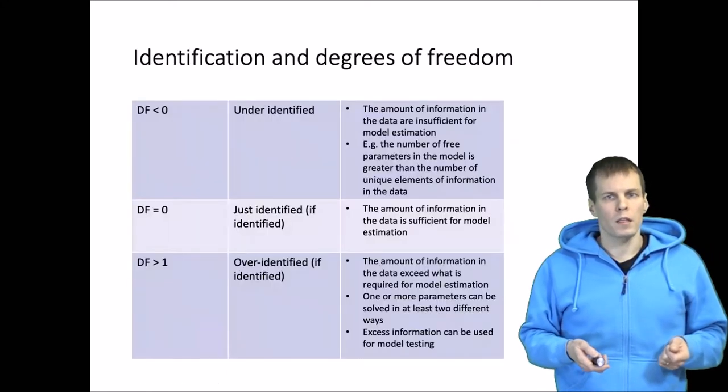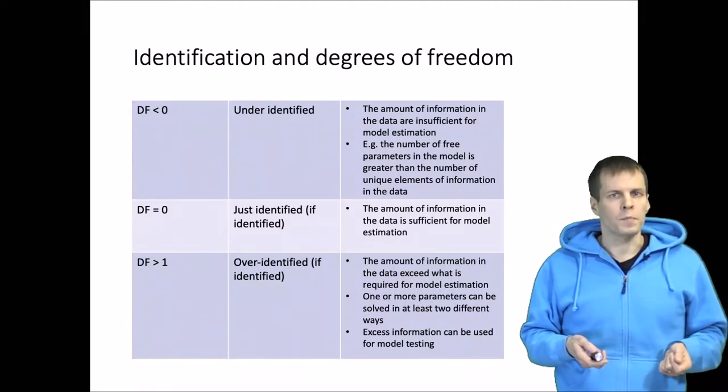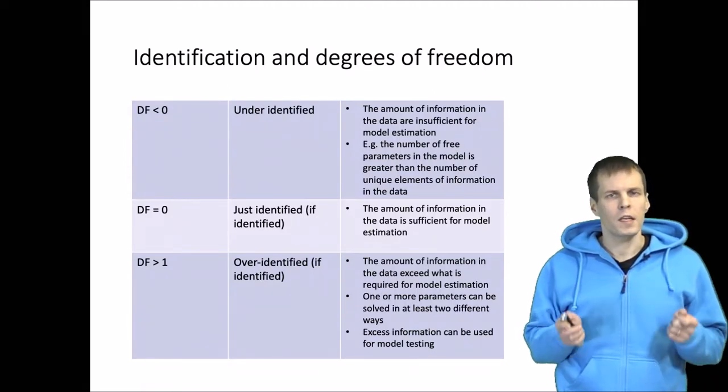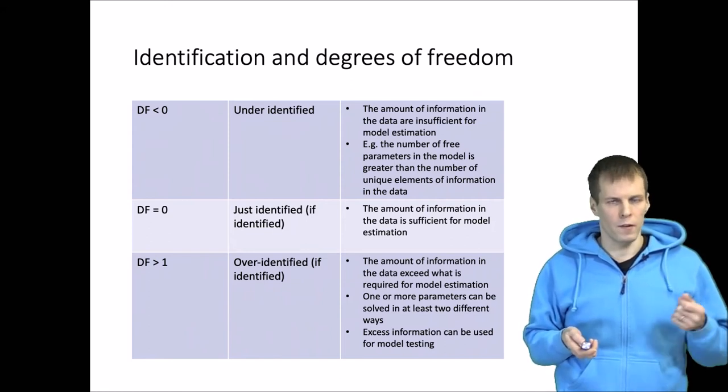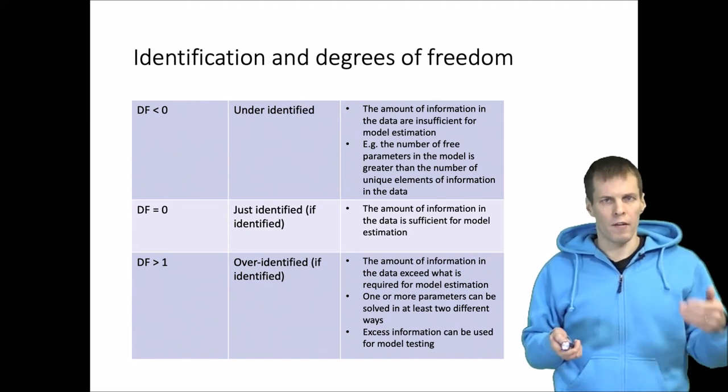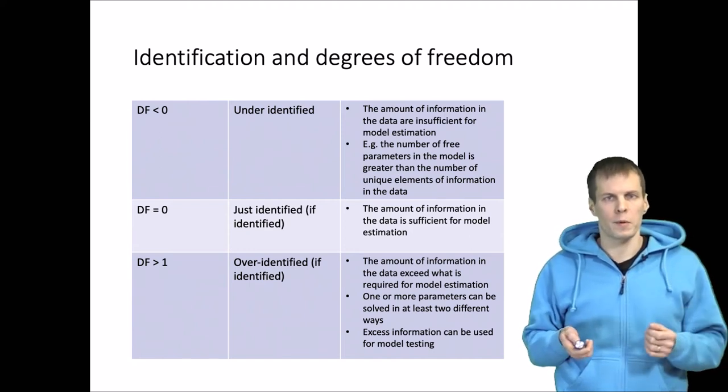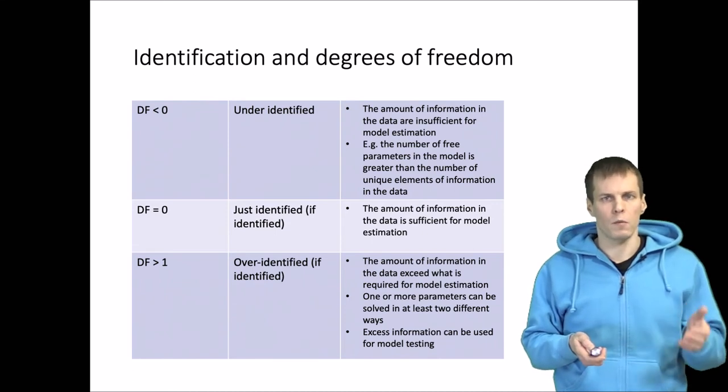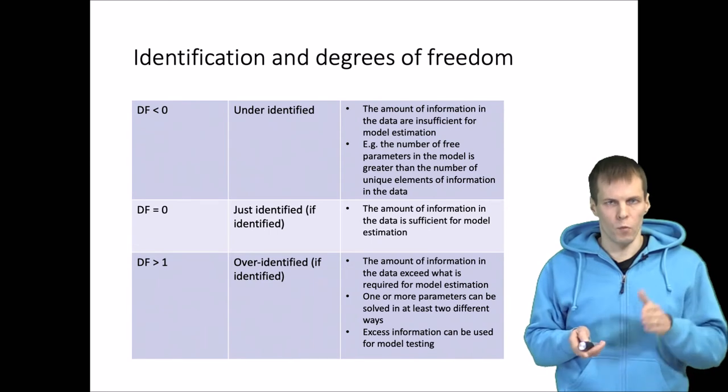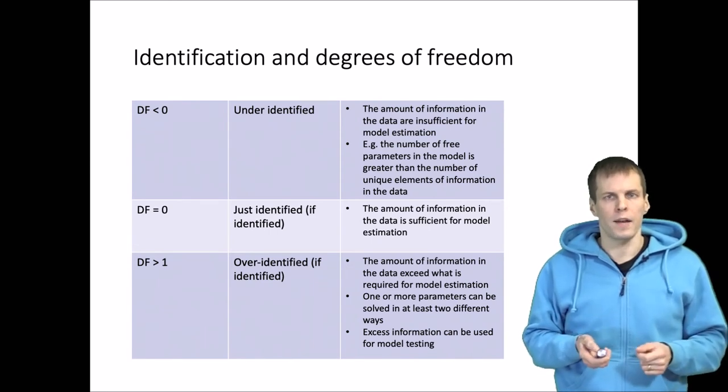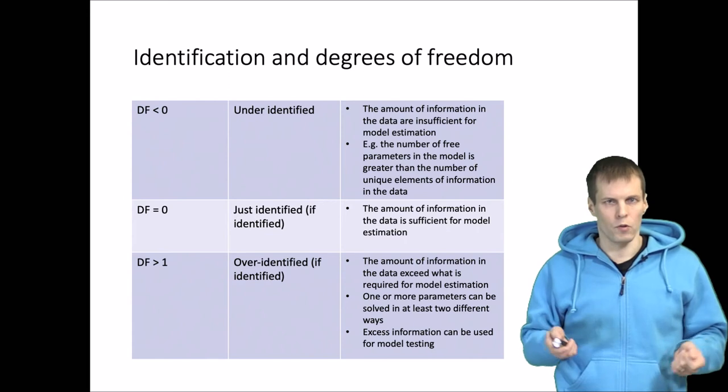Identification is related to degrees of freedom. If degrees of freedom is negative, we don't have enough information for estimating the model. For example, if we observe one variance and want to estimate two variances, we are trying to estimate two things from one unit of information and degrees of freedom would be minus one.